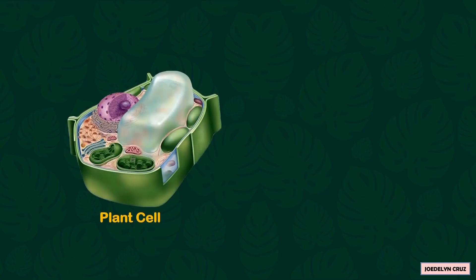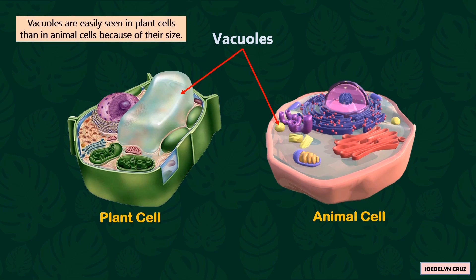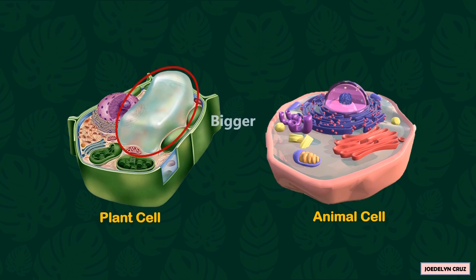The other organelles of plant cells that are also present in animal cells are vacuoles. However, vacuoles are more easily seen in plant cells than in animal cells because of their size. Vacuoles in plant cells are bigger than in animal cells.